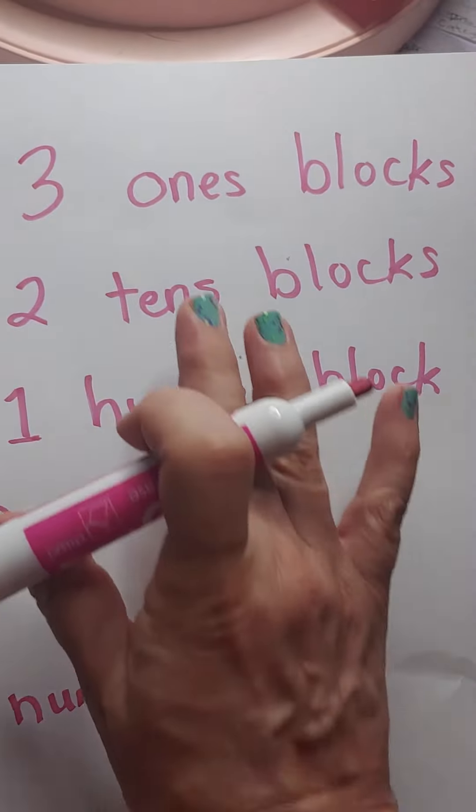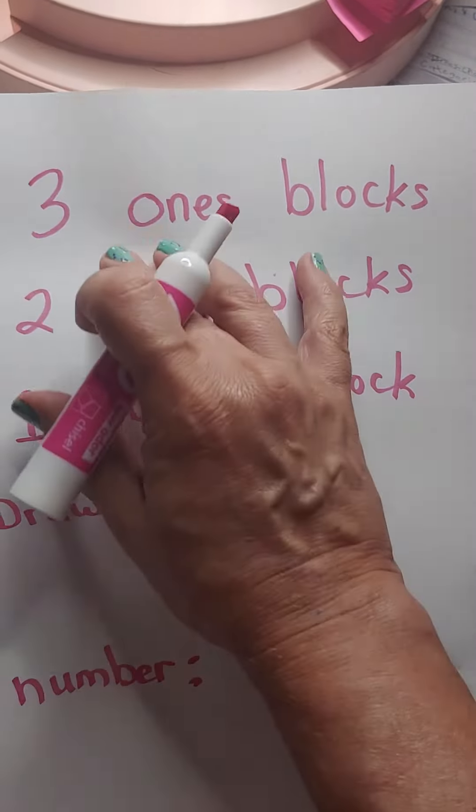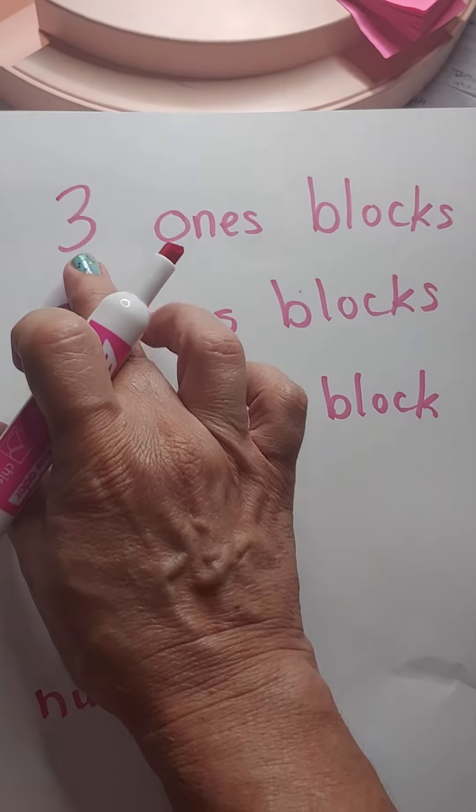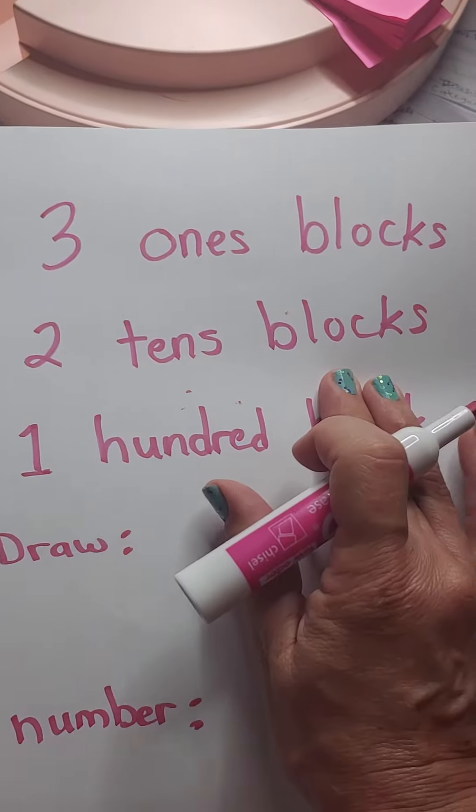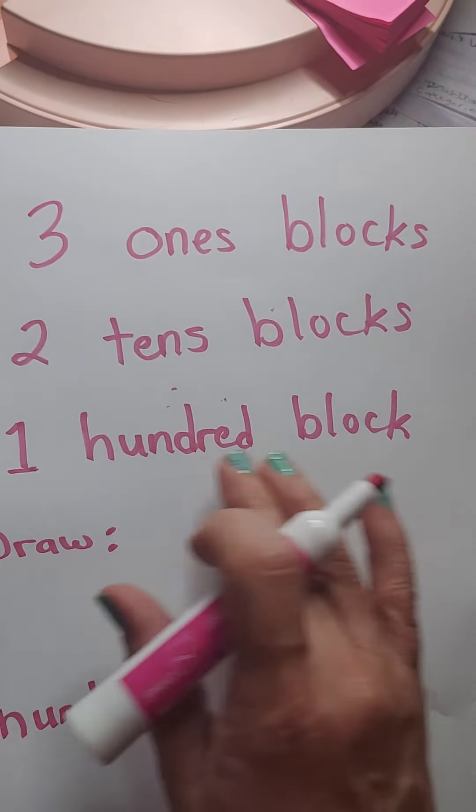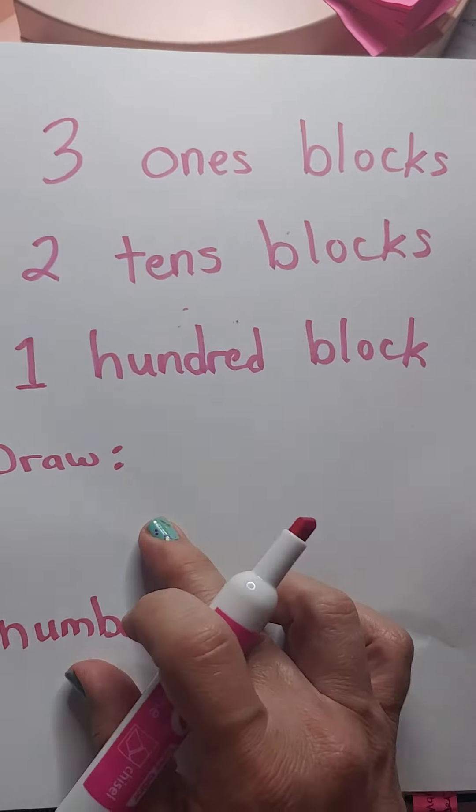Now, on this one, they did not draw it for us, but they gave us the information, the clues. Let's read them. Three ones blocks. Two tens blocks. One hundred block. Draw. That's the word draw. Let's draw it.